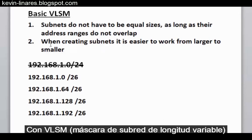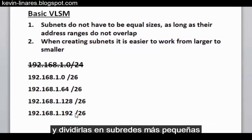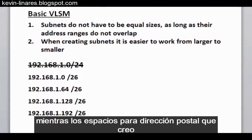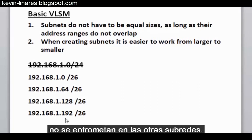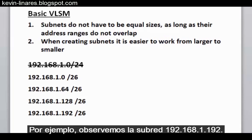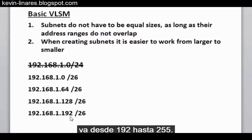With VLSM, or Variable Length Subnet Masks, I can decide that I want to change one of these subnets and further subdivide it into smaller subnets, as long as the subnets I create do not intrude into the other subnets. For instance, I could take this 192.168.1.192 subnet, whose address range goes from 192 all the way up to 255.